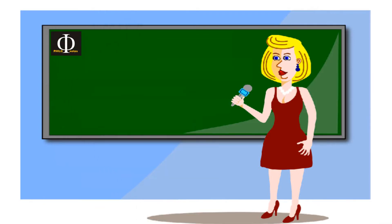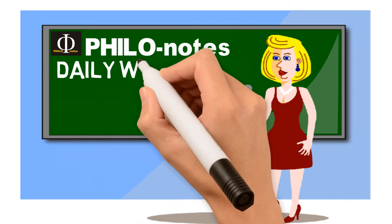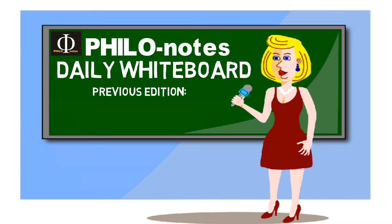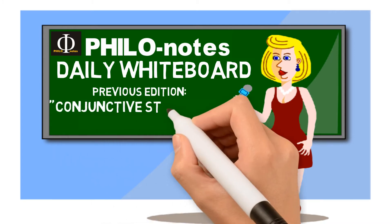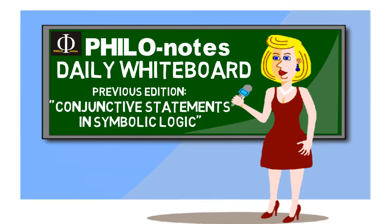Hello everyone, welcome back to Philo Notes. Previously in our daily whiteboard edition, I discussed one of the types of compound statements — conjunctive statement or proposition. Specifically, I discussed the nature and characteristics of conjunctive statements and explained how this kind of proposition is symbolized. I also illustrated the rule in conjunction through a truth table.